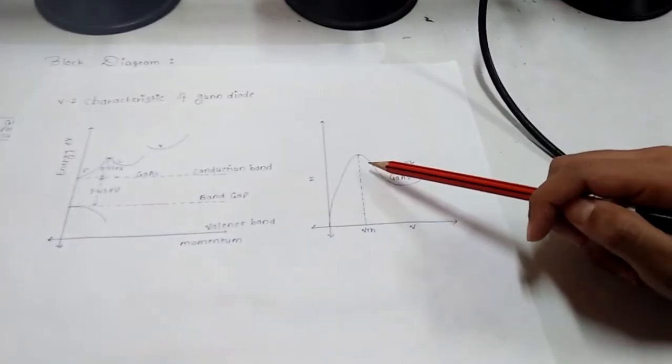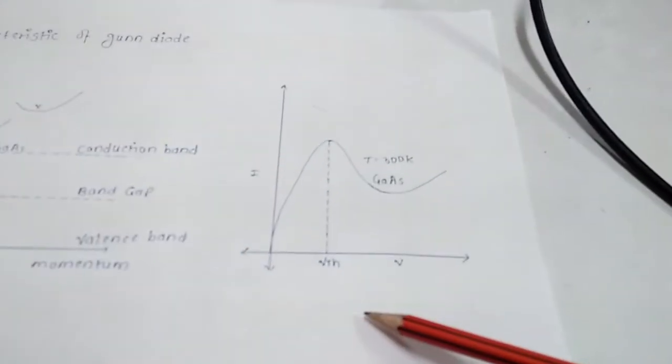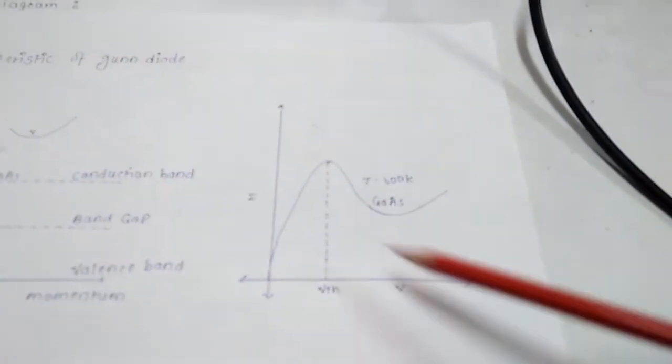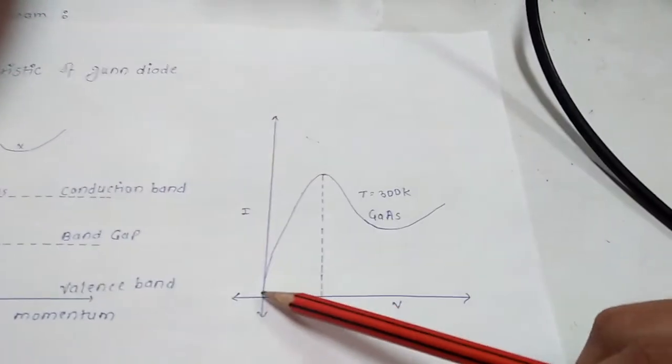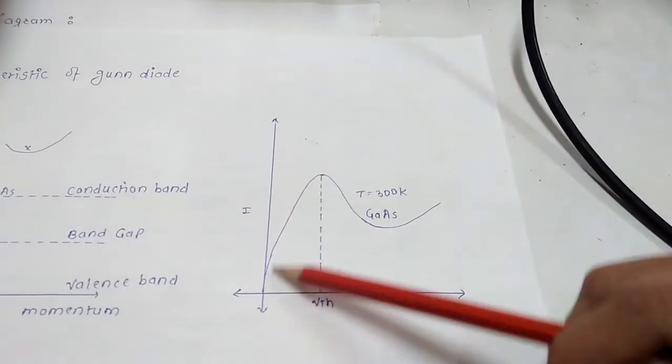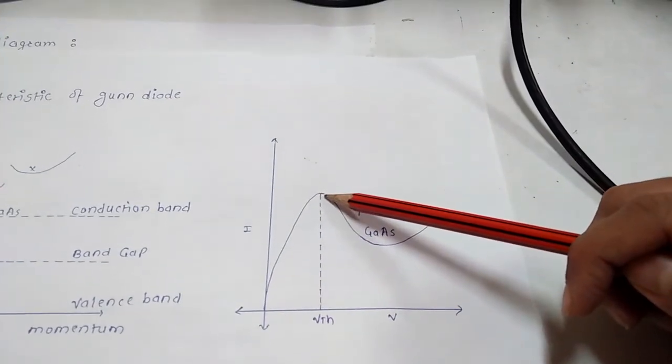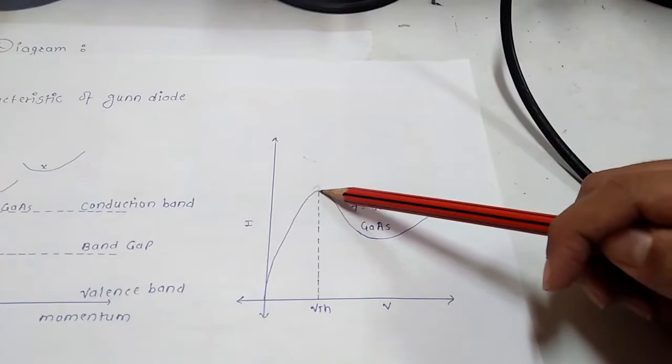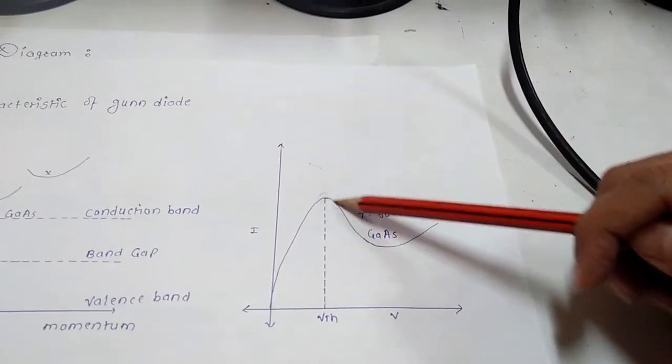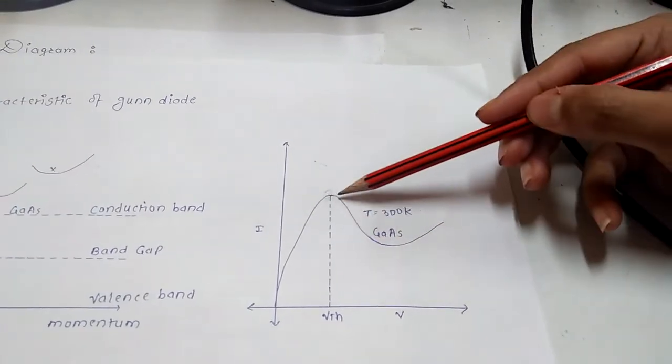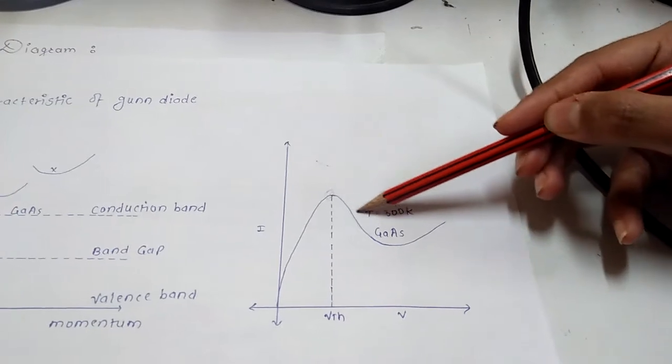Now we will see the ideal characteristic of Gunn diode. As we see initially, the voltage and current both are proportional to each other. As the voltage increases, current also increases. But after a threshold value, we obtain a negative resistance region. Negative resistance region means as the voltage increases, the current decreases.